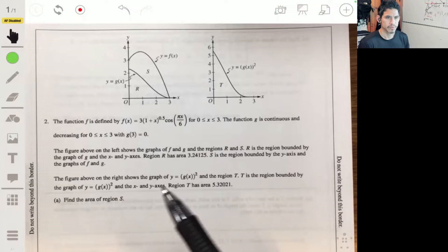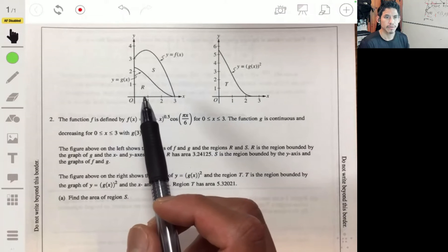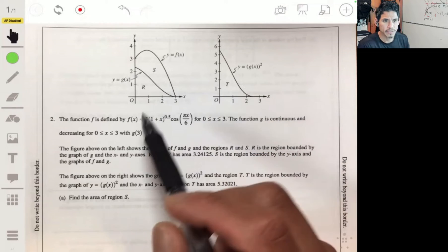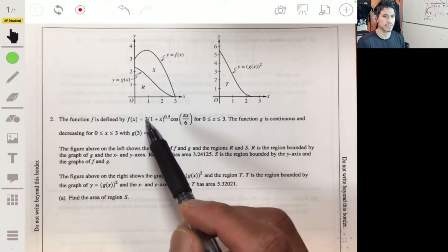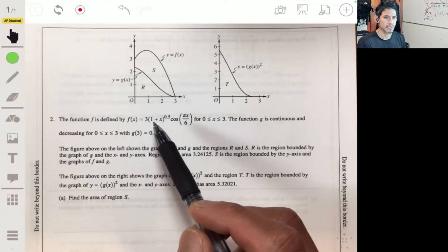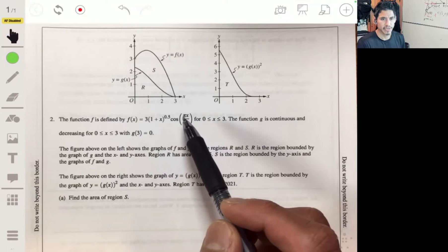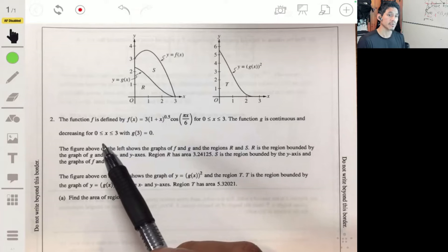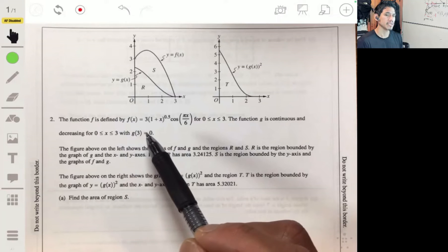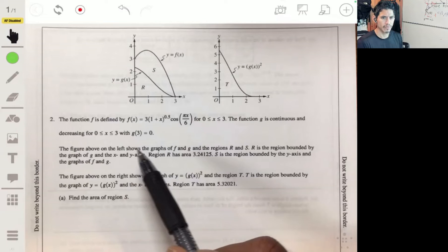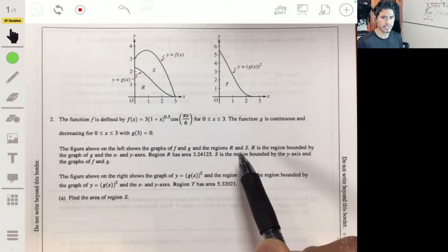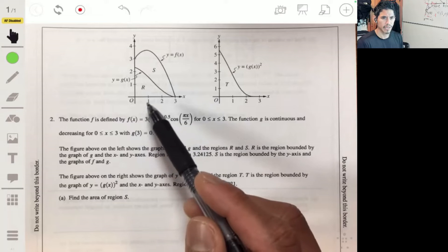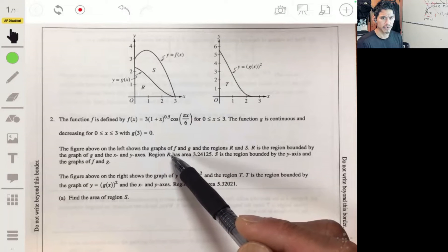Alright, so free response problem two. We got this crazy graph, two graphs actually, with regions R, S, and T. We're told that function f is defined by this equation, equal to 3 times the quantity of (1 + x)^0.5 times the cosine of πx/6 for values of x from 0 to 3.